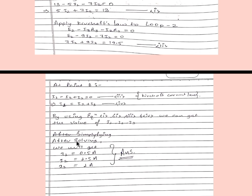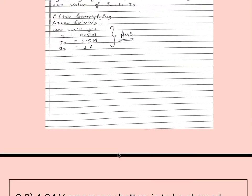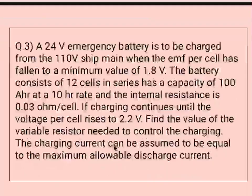After solving all three equations, we get: I1 equal to 0.5 ampere, I2 equal to 1.5 ampere, and I3 equal to 1 ampere. That is our answer. Now moving to question number three.